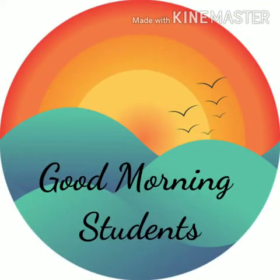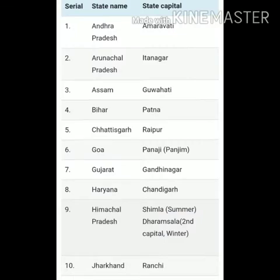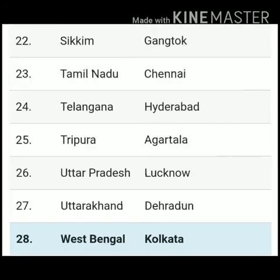Hello everyone, a very beautiful good morning to all. Today in this video we will have a look at the location of different states of our country India. Also we will learn the capitals of these states. So as you all know that there are 28 states. Now let's have a look at them in alphabetical order.